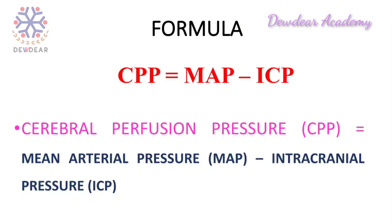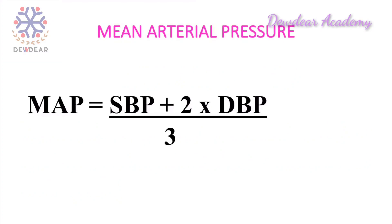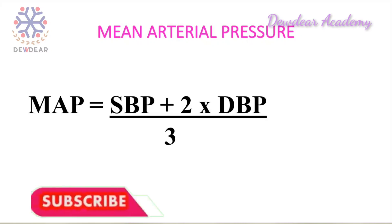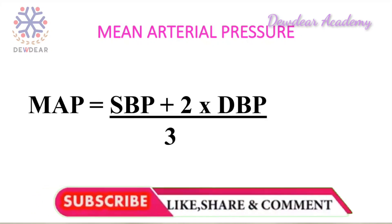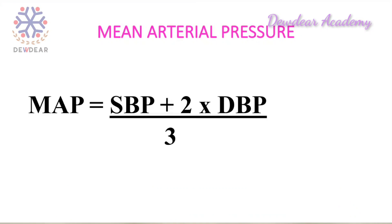Mean arterial pressure (MAP) is the driving force that pushes blood into the brain. It is calculated from measured systolic and diastolic blood pressure values: MAP = (SBP + 2 × DBP) / 3, that is systolic blood pressure plus two times diastolic blood pressure, divided by three.